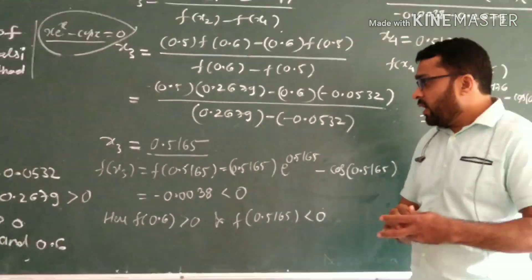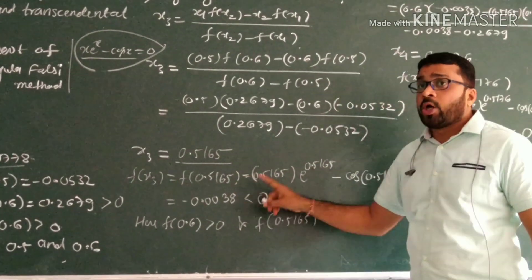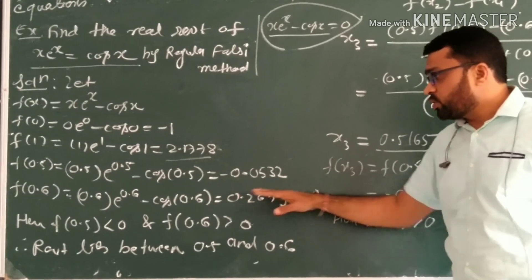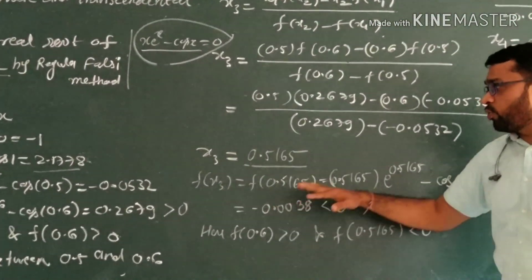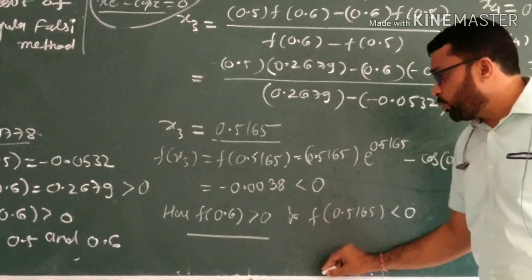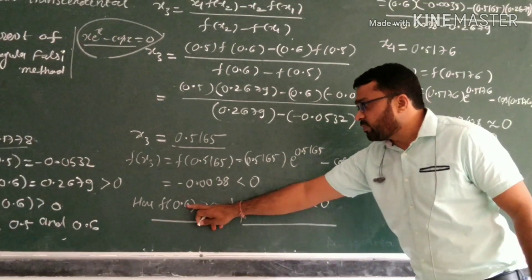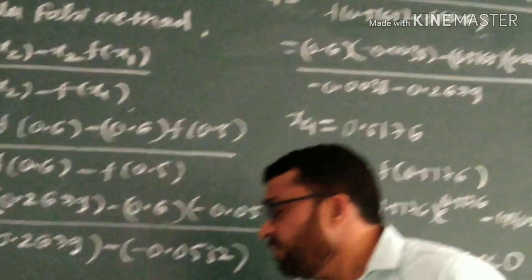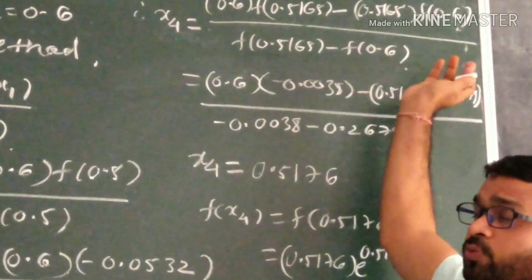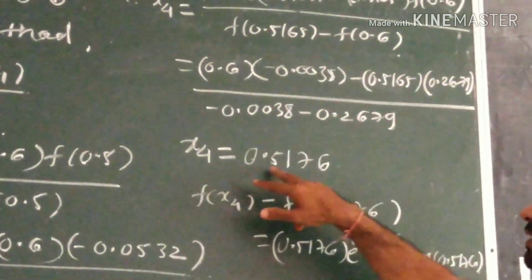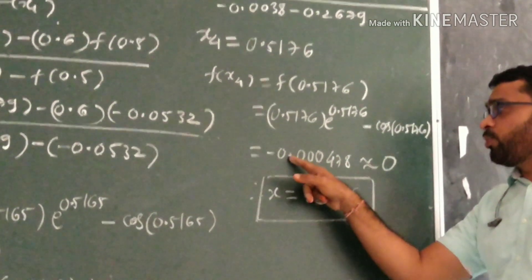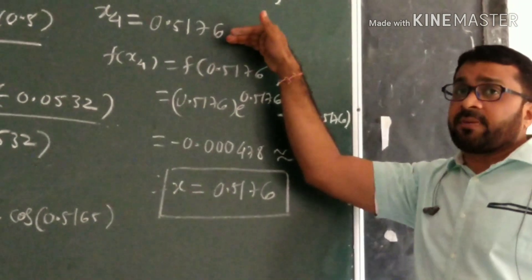This is the next iteration. Function value at 0.5165 is negative, so the root lies between 0.5165 and 0.6. Apply Regula-Falsi method: x4 will be 0.6·f(0.5165) - 0.5165·f(0.6) divided by the subtraction of function values. Put all the values already calculated. We get x4 = 0.5176, and it is coming out to be -0.000478. So the root is correct up to 3 decimal places.